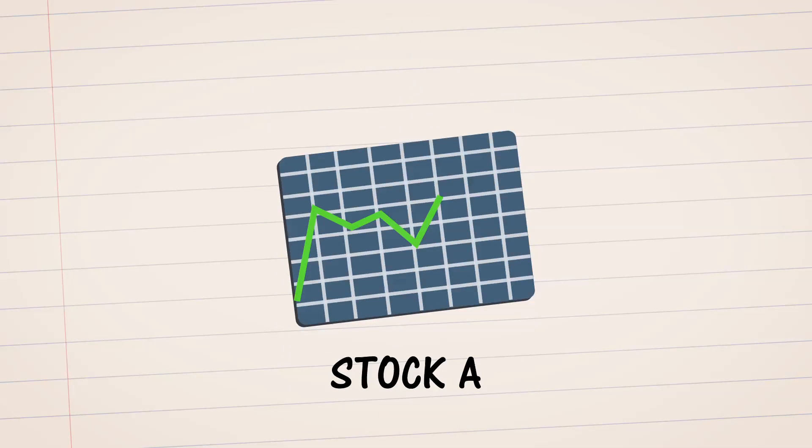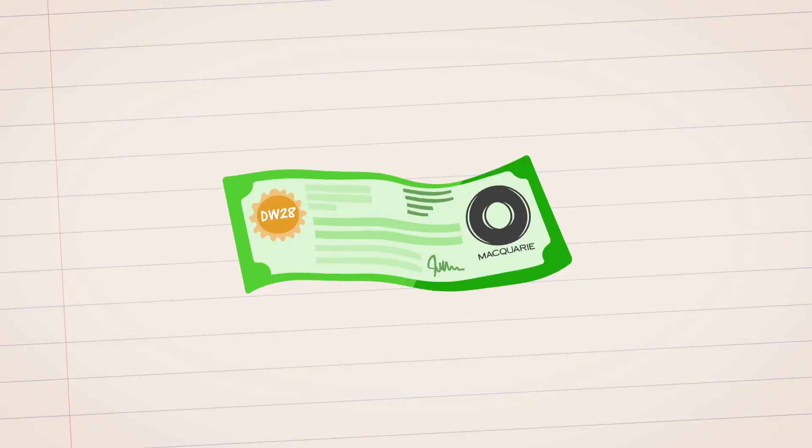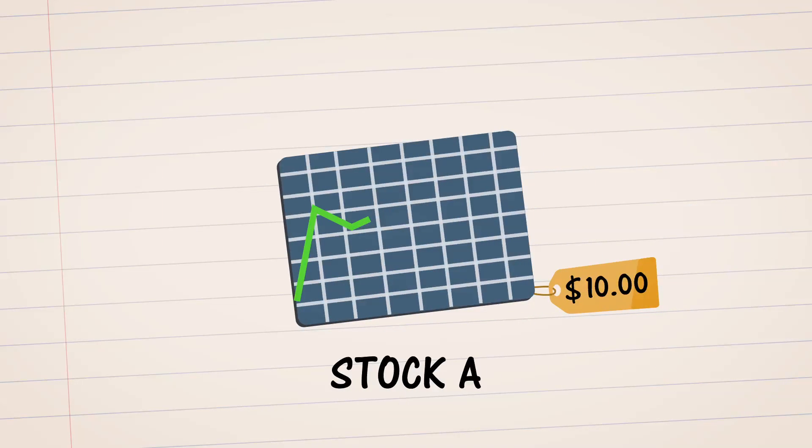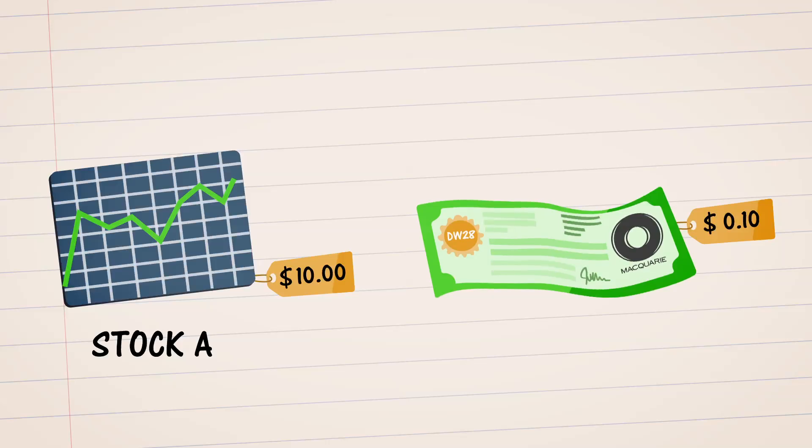For instance, let's say stock A is being sold for $10 but stock A's DW are only 10 cents, just 1% of the stock's price. Instead of purchasing stock A, you can purchase the stock's call DW and still profit if the stock goes up.